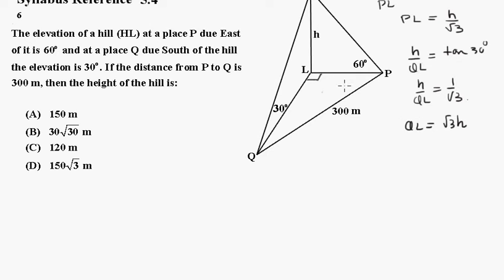Now using Pythagorean theorem, we're going to say that PL squared, which is H on root 3 all squared, plus QL all squared, root 3 H all squared, must be equal to 300 squared.